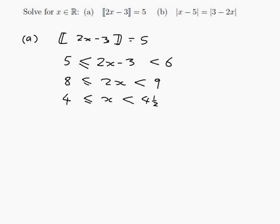And that's the solution. Any x that's in that range will make 2x minus 3, the floor of it, equal to 5. And we can, if we really want to, write it as a set. So x is in the set from 4, including 4, up to 4 and a half, but not including 4 and a half.